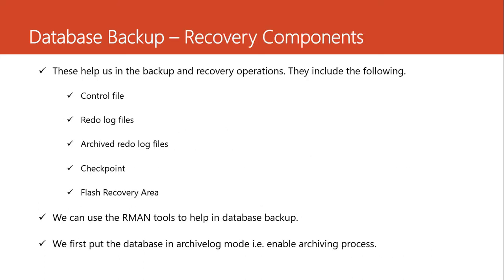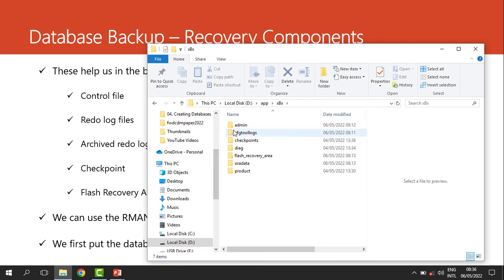We have what we call the backup and recovery components. They are extremely important. These components really help us in the backup and recovery operations. We have the control file — it is really important and it should always be backed up. Then we have the redo log files, the archived redo log files, the checkpoint process, and finally the flash recovery area. The flash recovery area is the storage location where we store all our recovery-related files, such as copies of the control files, copies of the data files, and archived redo log files. Any file that is related to database recovery is stored in the flash recovery area.